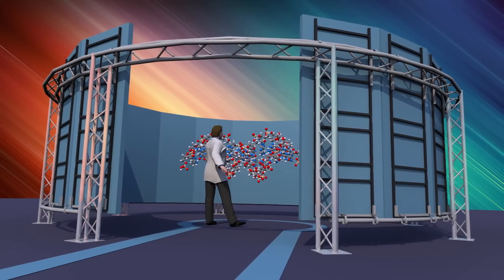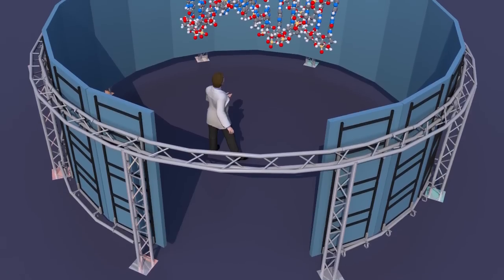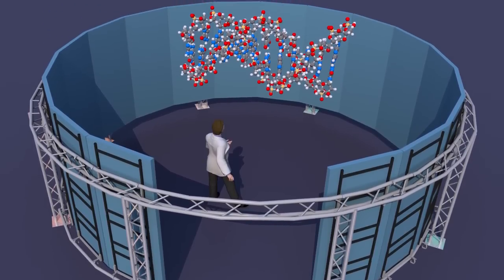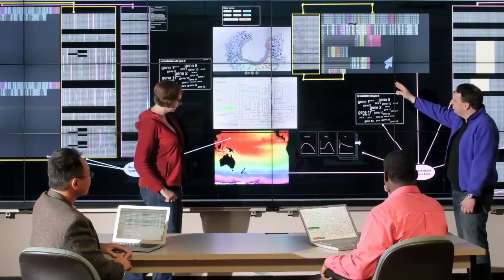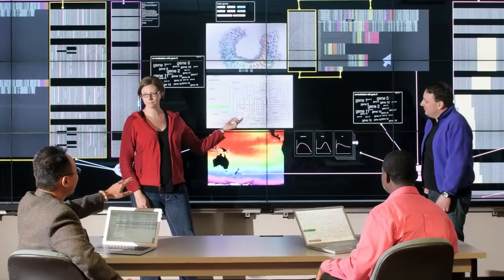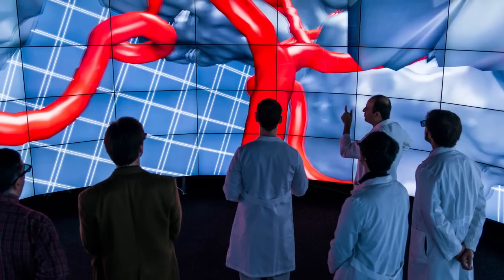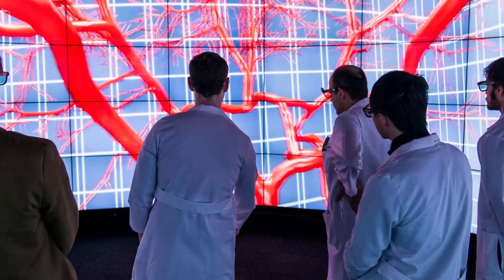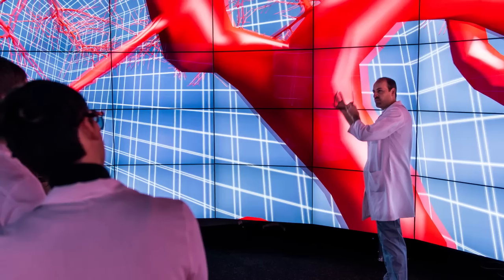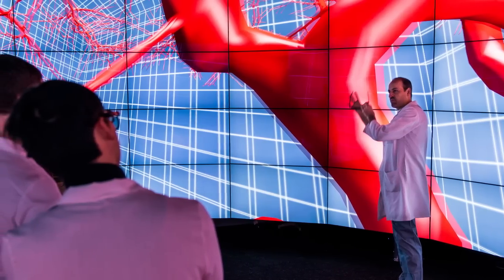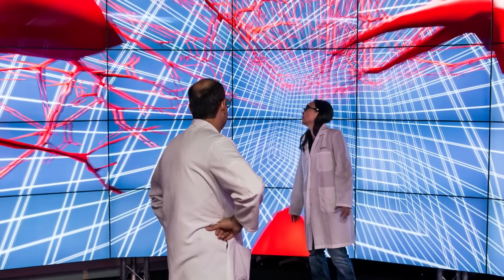CAVE 2 is a 24 feet wide and 8 feet tall large-scale hybrid reality environment. It combines the benefits of both scalable resolution display walls and CAVE virtual reality systems to create a seamless 2D-3D environment that supports both information-rich analysis as well as virtual reality simulation exploration at a resolution matching human visual acuity.